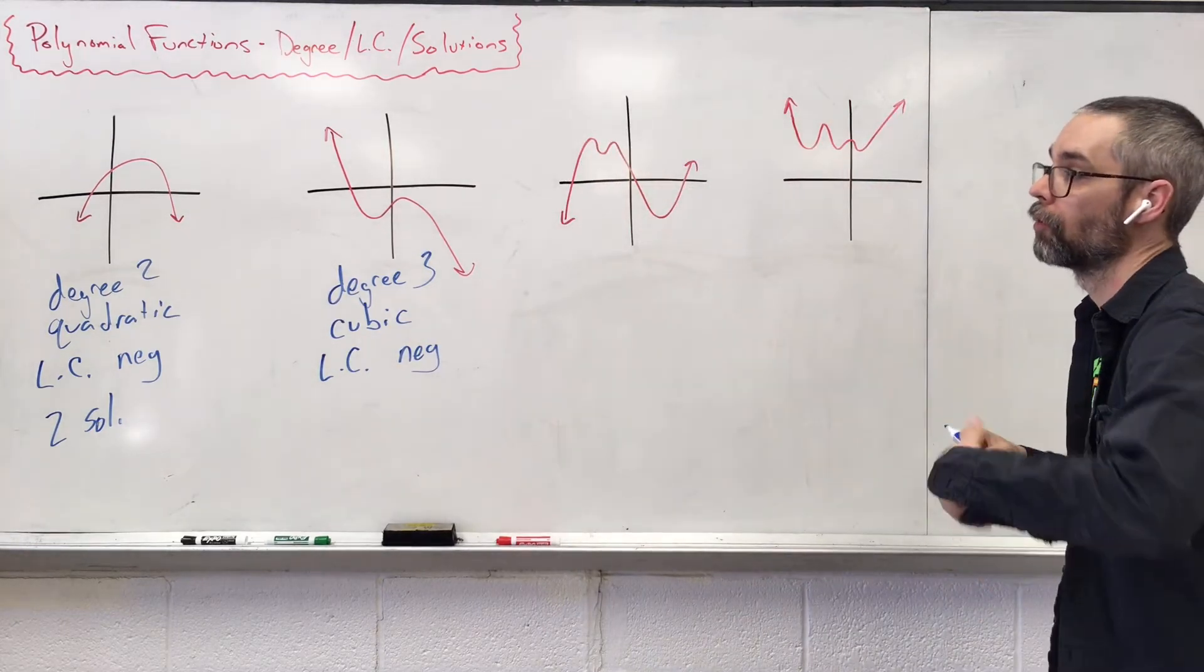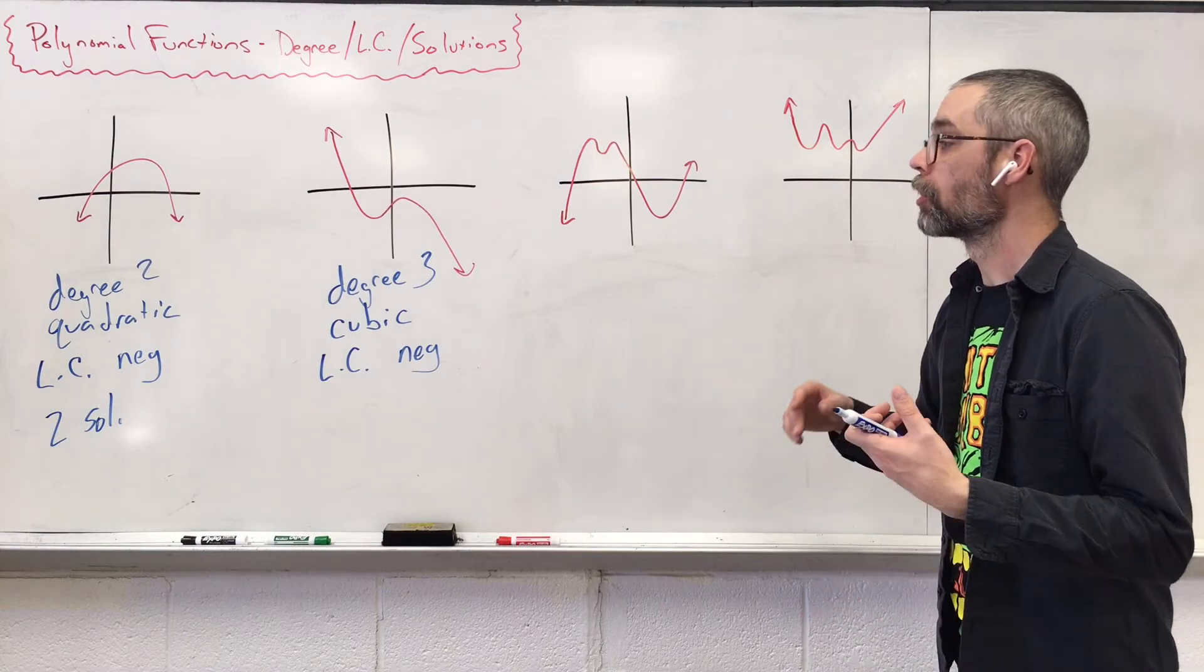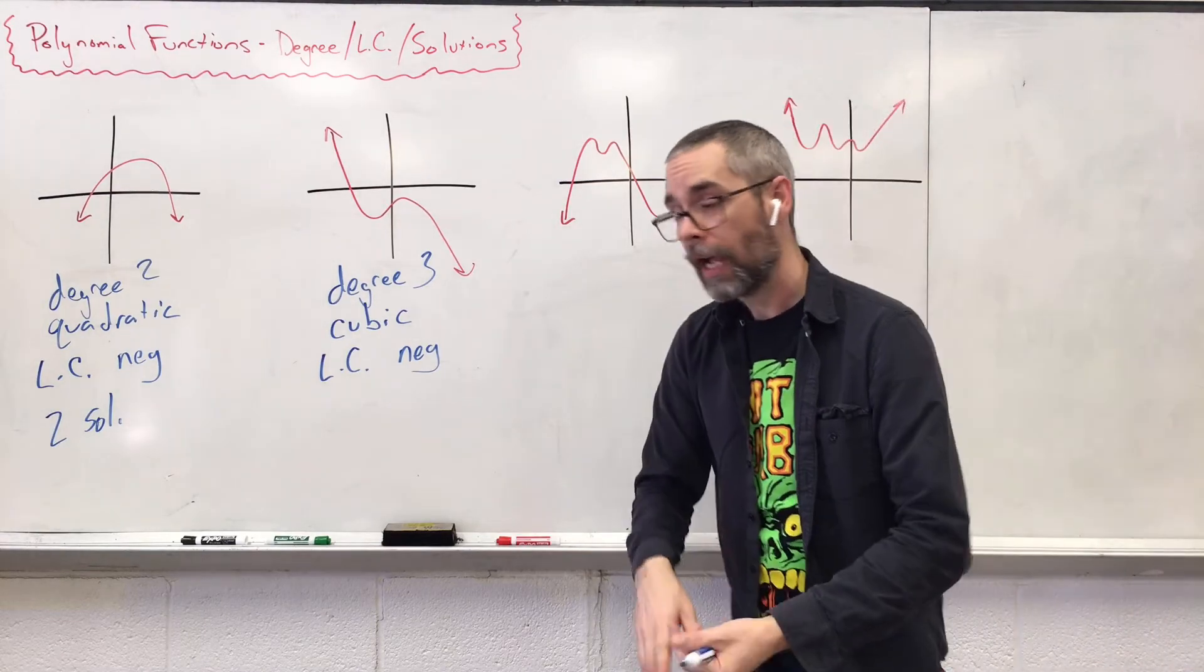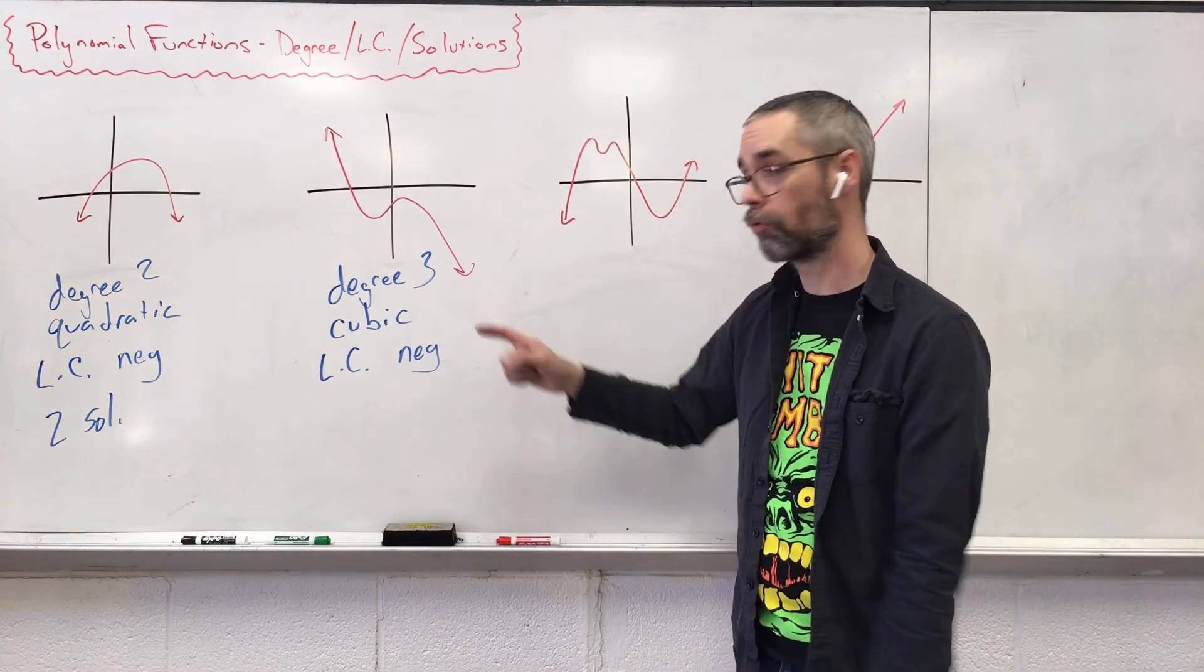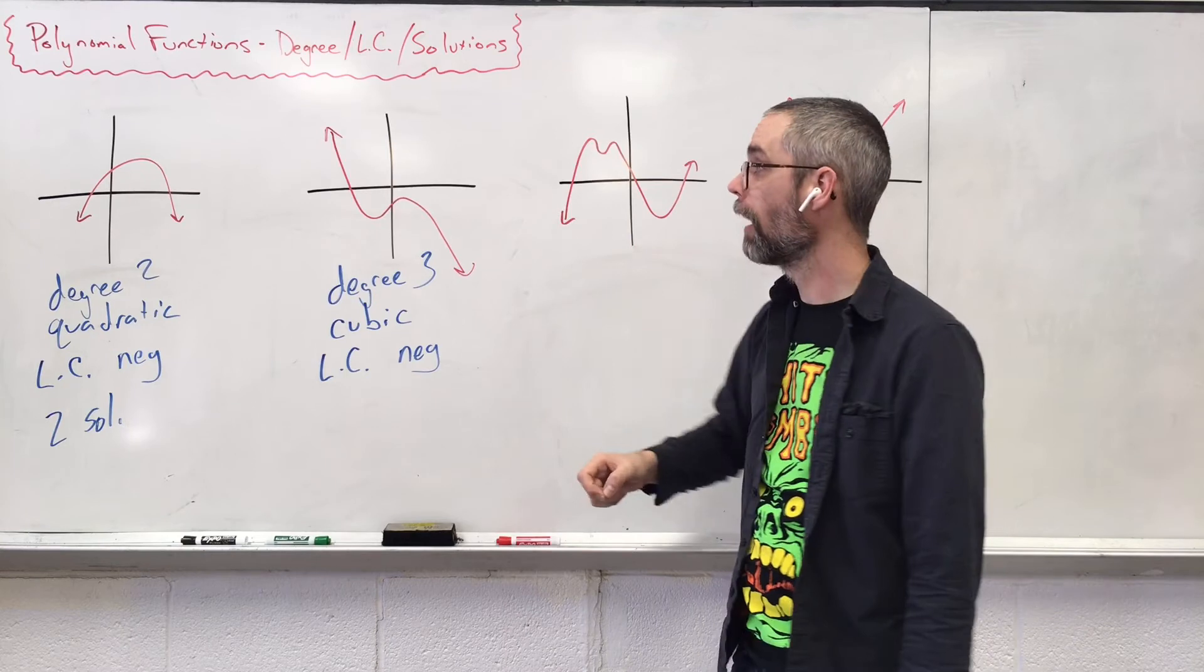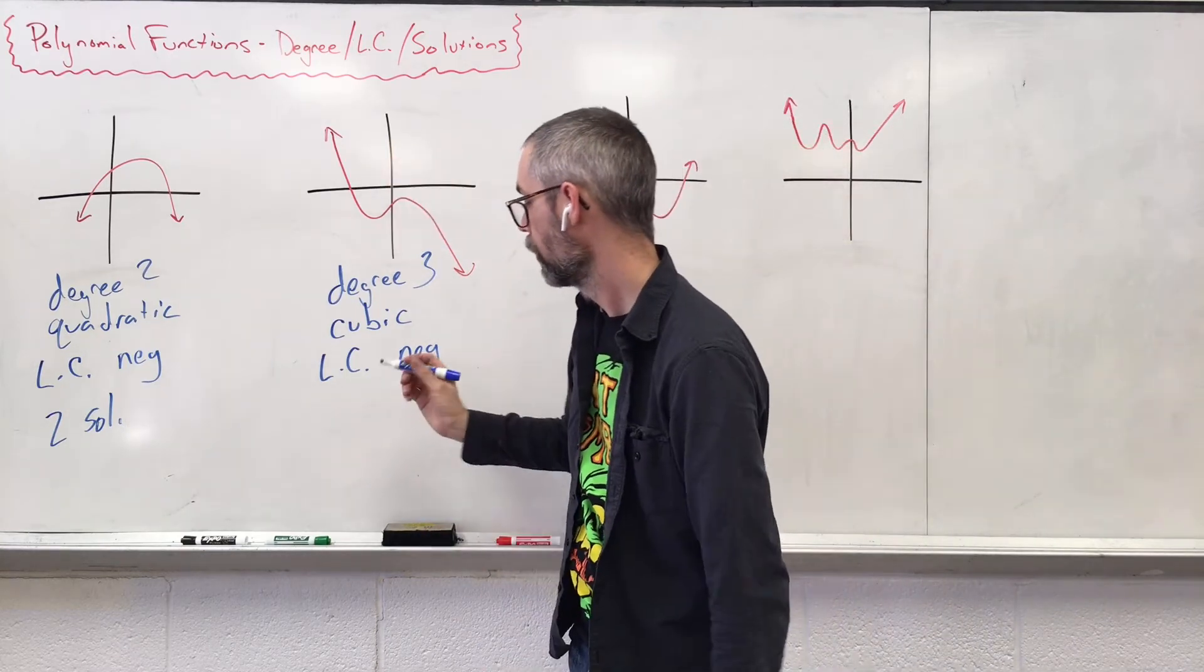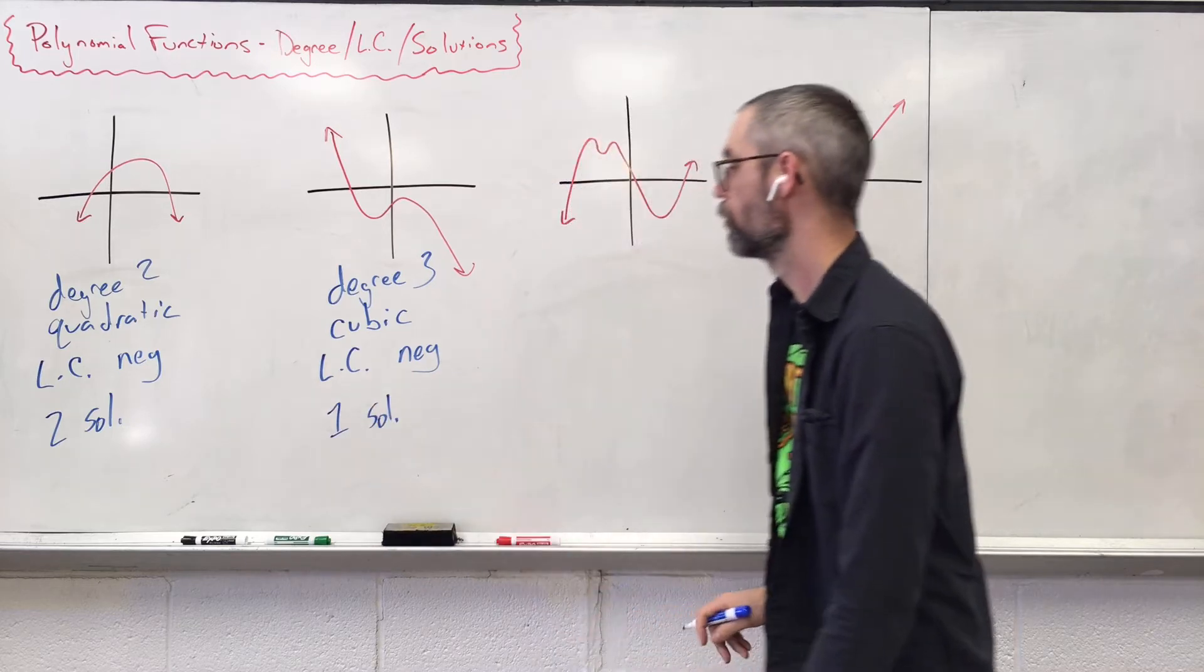I want to find out the number of solutions, how many times we cross the x-axis. Well, in the general graph, we could cross up to three times because they match up with our degree. But this specific graph, how many times does it cross that x-axis? Only once. So we only have one solution.